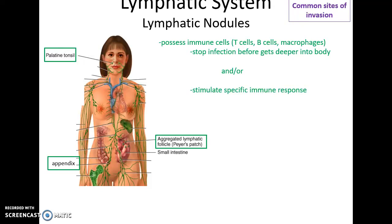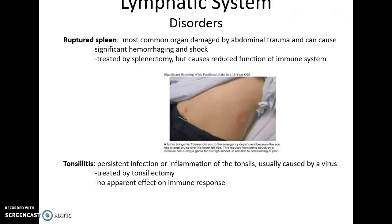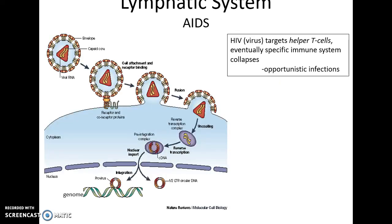Lymphatic nodules possess immune cells — B cells, T cells, and macrophages — and they aim to stop the pathogens and stop the infection before it becomes too serious. Disorders: a ruptured spleen is a common abdominal trauma disorder. If significant enough, the spleen will be removed via splenectomy. The person will survive but their immune function will be reduced. Tonsillitis is a persistent or reoccurring inflammation and infection of the tonsils. If it occurs enough times or severely enough, it may be treated with a tonsillectomy.